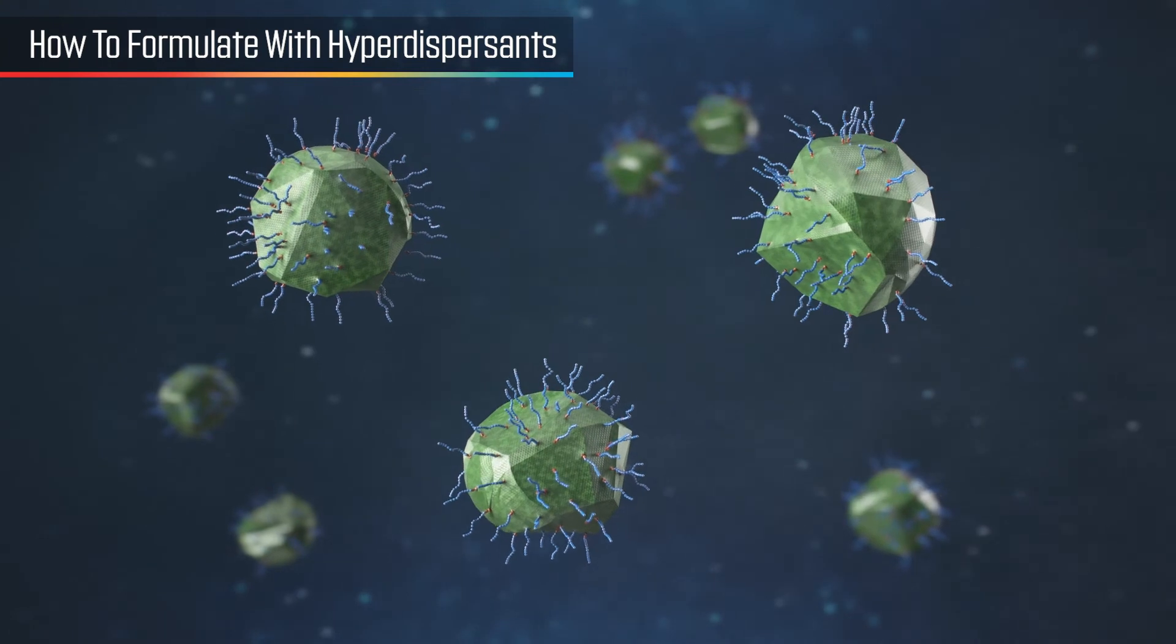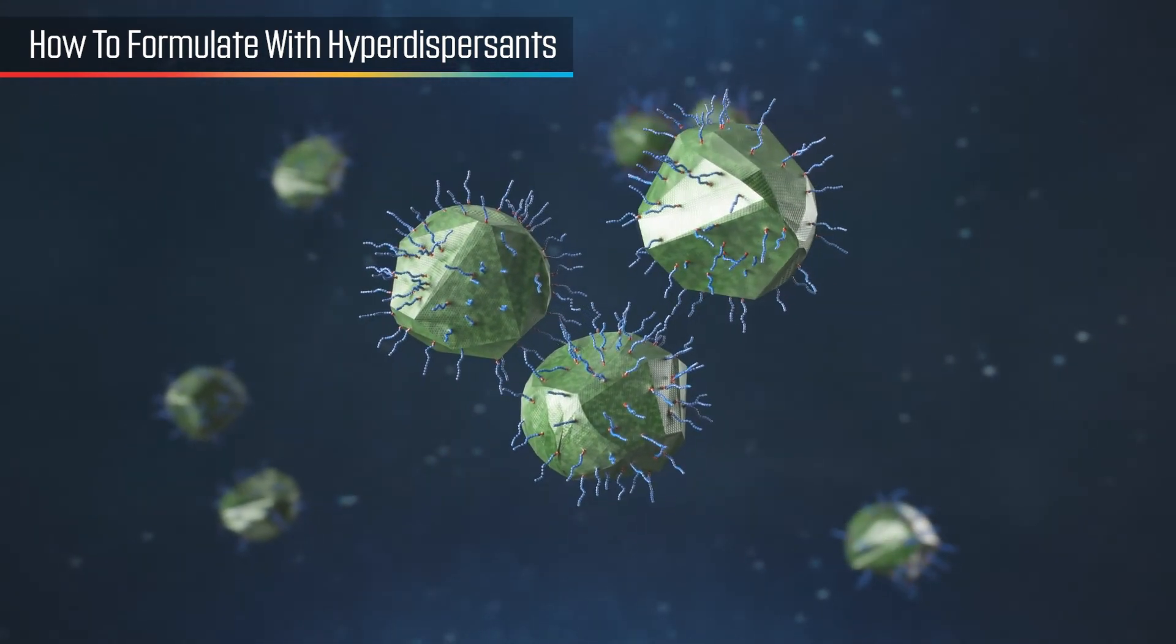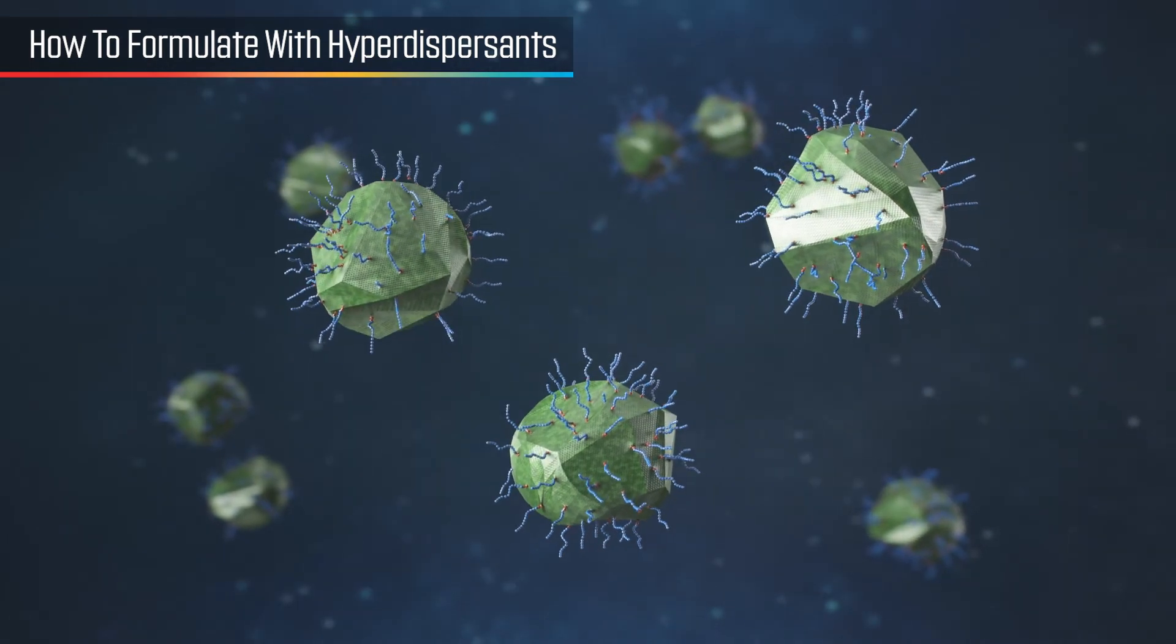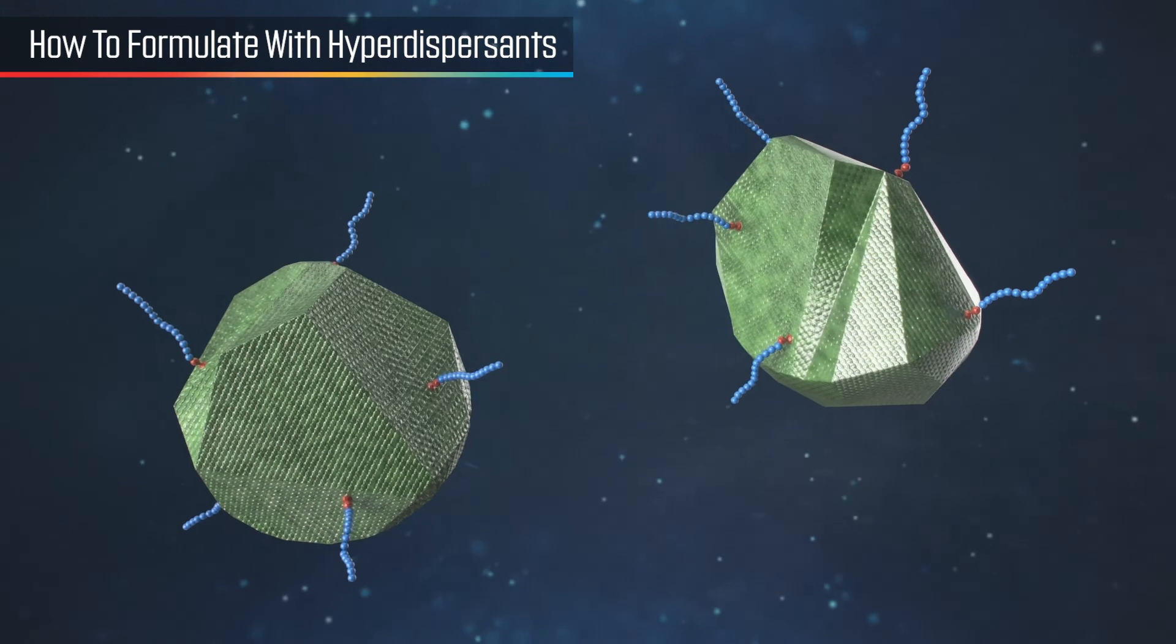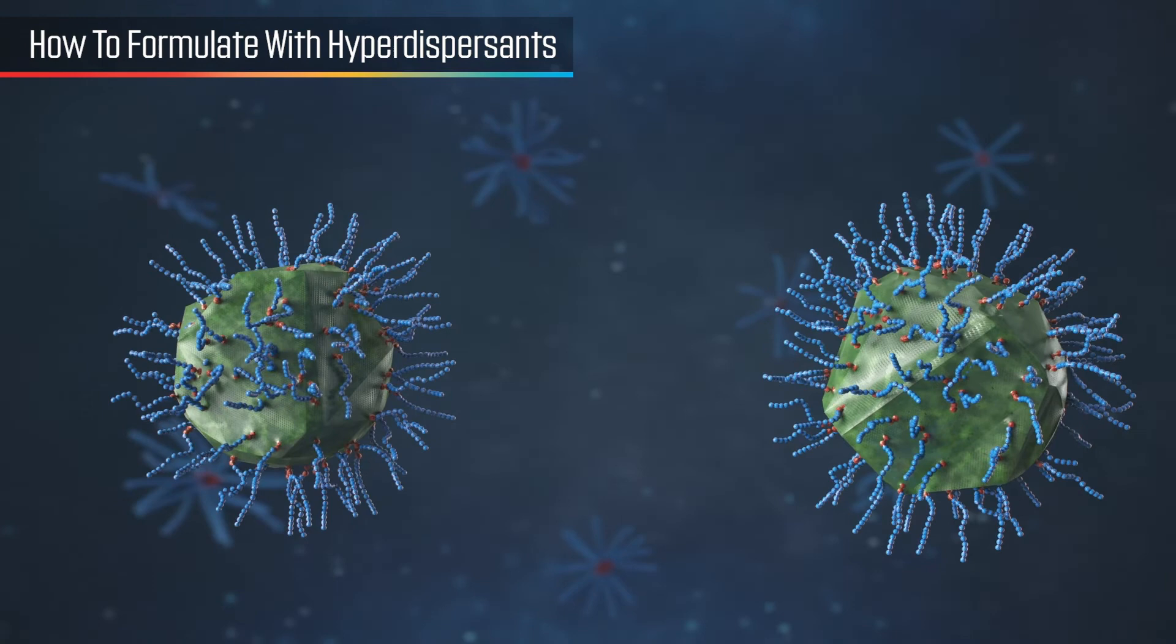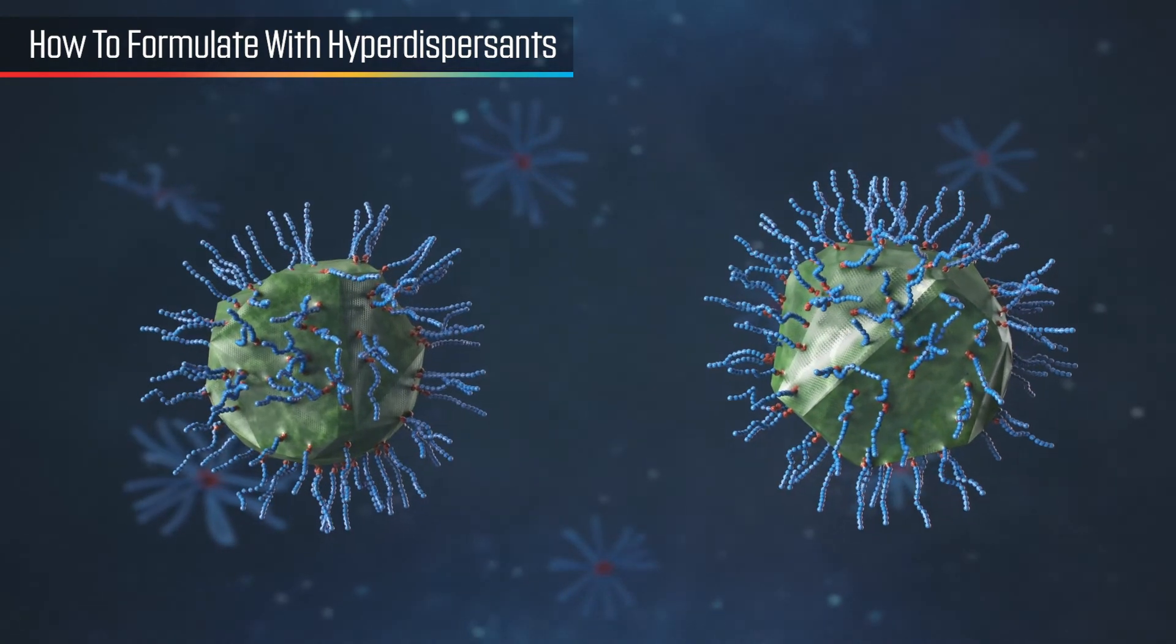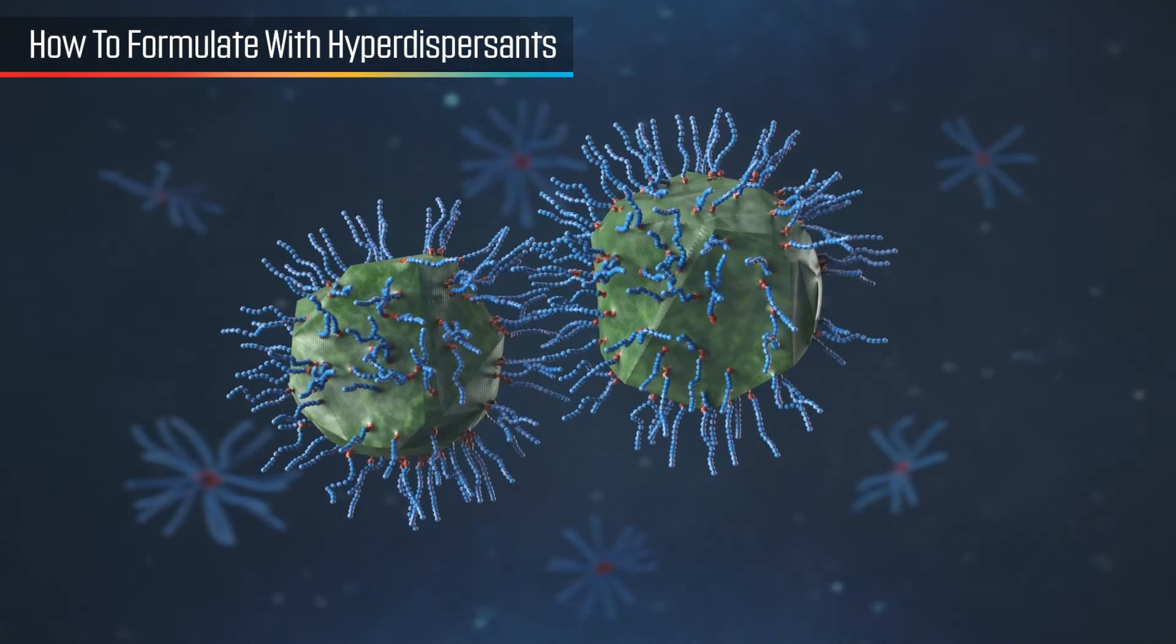After choosing the preferred dispersant, the optimum amount of hyperdispersant required is dependent on the surface area of the pigment. If too little is used, the full benefits will not be realized. If too much is used, the thickness of the protective barrier is reduced as a result of overcrowding on the pigment surface.